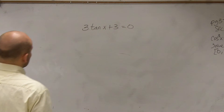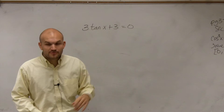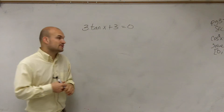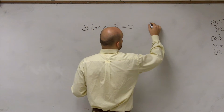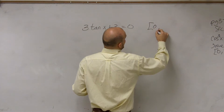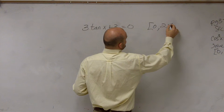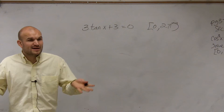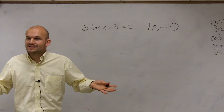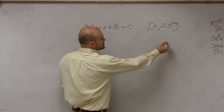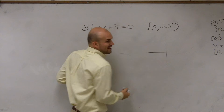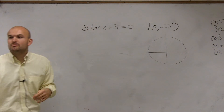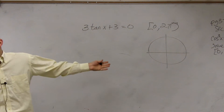What we have, ladies and gentlemen, is 3 tangent of x plus 3 equals 0. What we previously always did was solve this on the interval of 0 and 2π. We always wanted to contain our answer between 0 and 2π, which was very helpful because when evaluating for sine, cosine, or tangent, our interval between 0 and 2π was up on the unit circle.